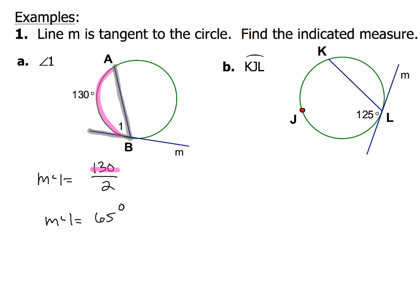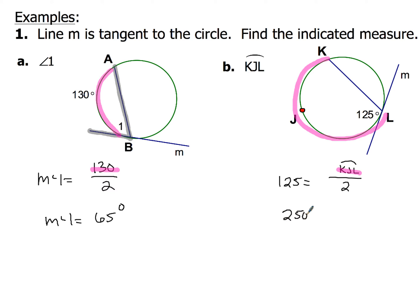Example B: this time we've got to find the measure of arc KJL. We're given this angle on the inside is 125 degrees. So we set it up: 125 degrees is equal to arc KJL divided by two. We don't know the arc yet, so to solve this, just multiply both sides by two — double 125 — and you get 250 for the measure of arc KJL. In example A we knew the arc and divided by two; in example B we knew the angle and had to double it to find the arc.